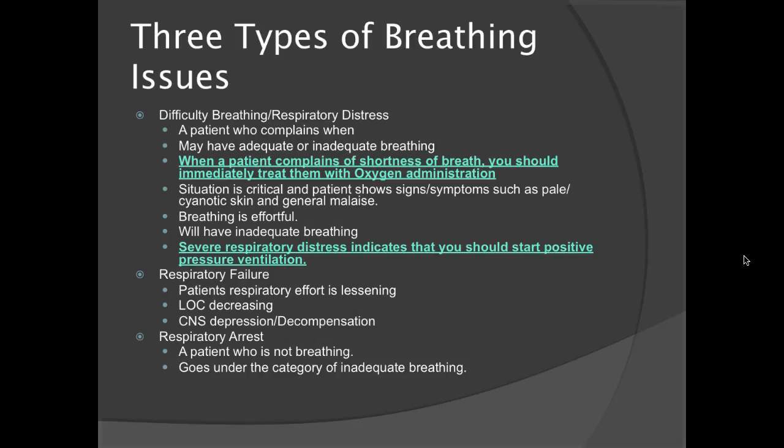There are three major types of breathing issues. The first is difficulty breathing, or respiratory distress. A patient who complains of difficulty breathing may have adequate or inadequate breathing. When a patient complains of shortness of breath, you should immediately treat them with oxygen administration — no questions asked. The situation is critical, and the patient shows signs such as pale or cyanotic skin and general malaise. Cyanosis will initially start around the lips and nail beds. If it progresses farther, the situation is getting much worse.